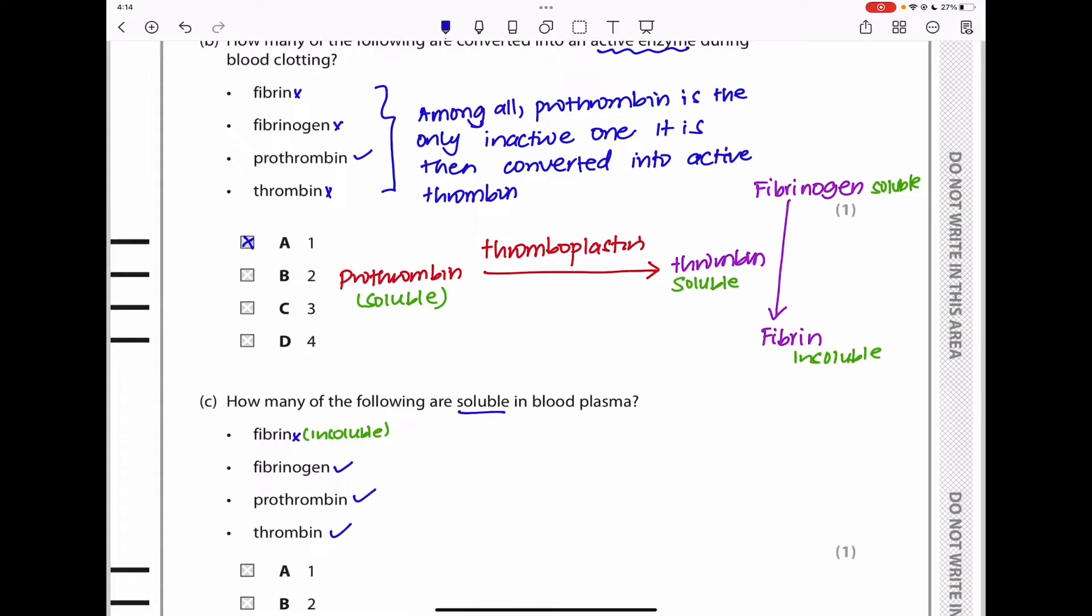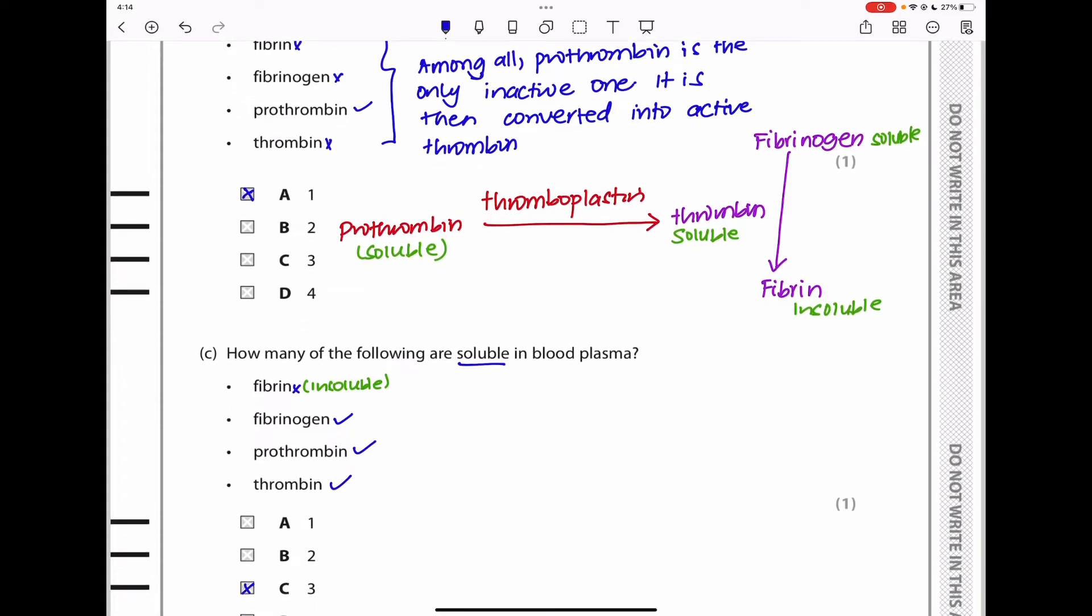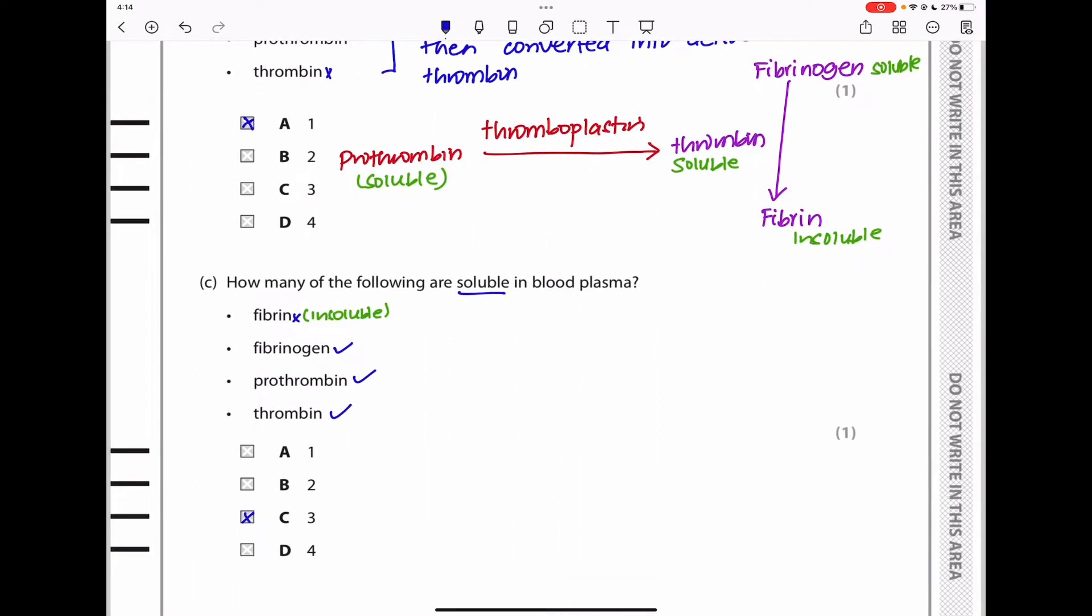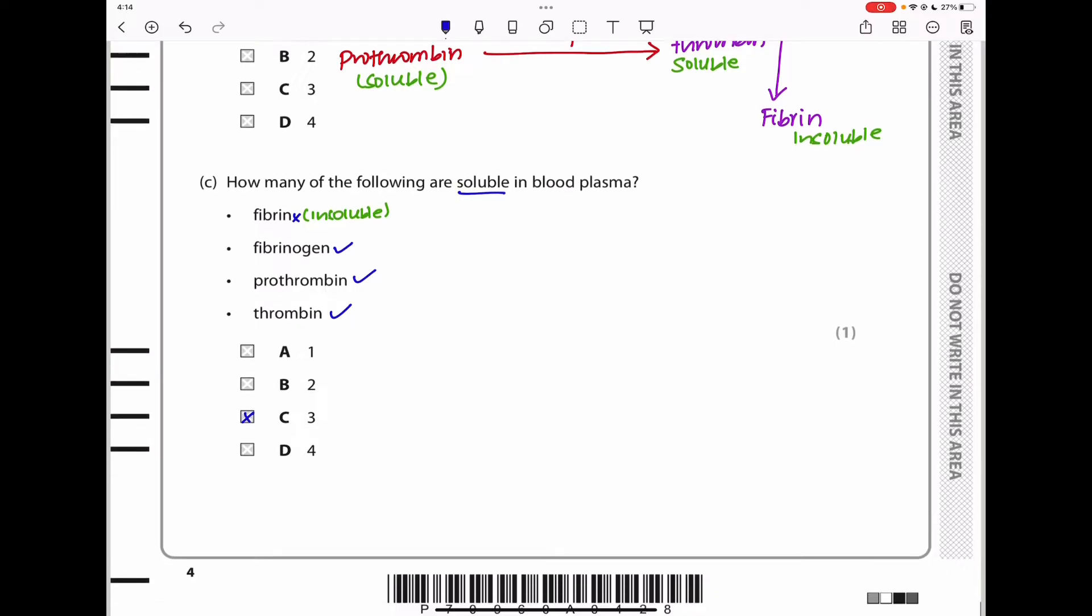Moving down, they say how many of the following are soluble in blood plasma? We can see fibrinogen is going to be soluble, prothrombin is soluble, and thrombin is soluble. So three of them are. Fibrin is not soluble. Let's continue to the next part.